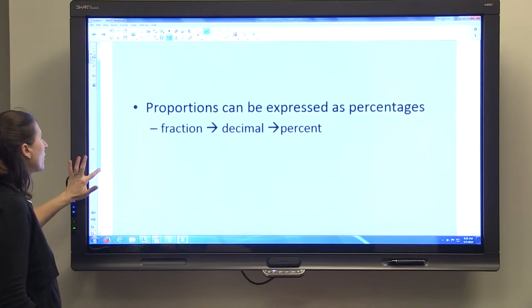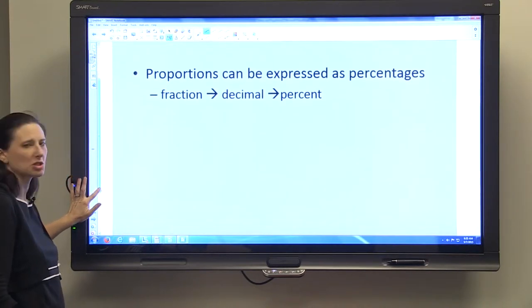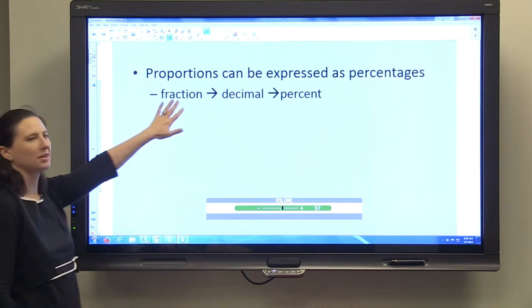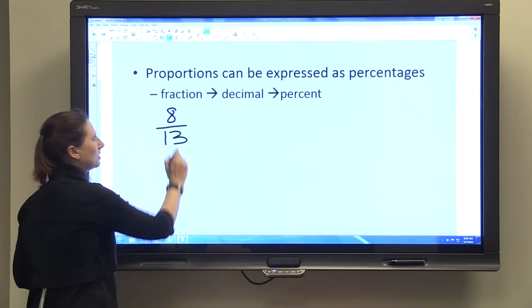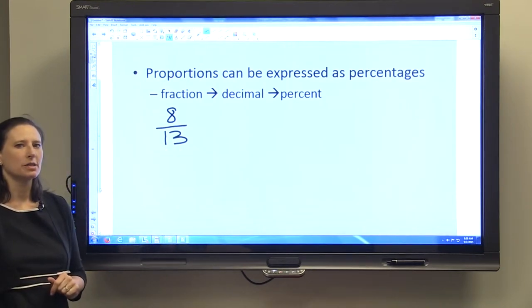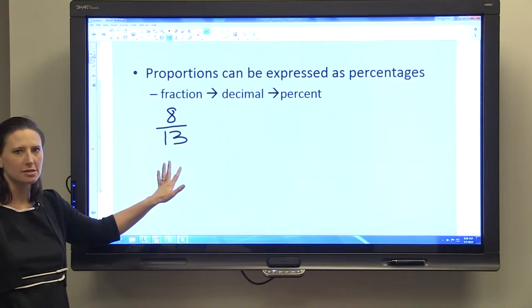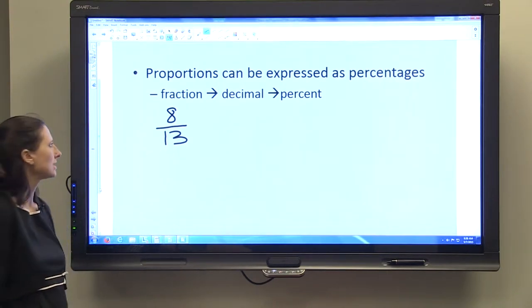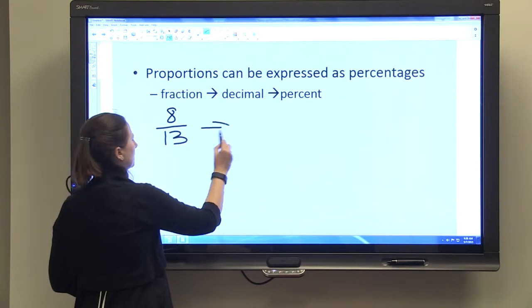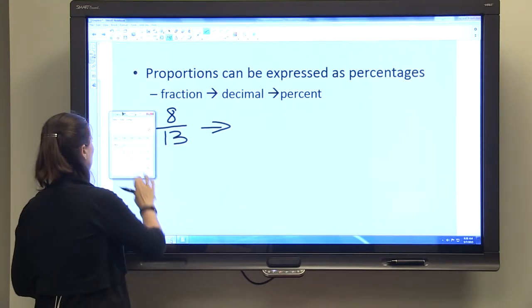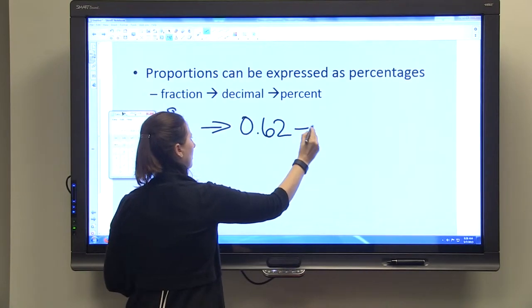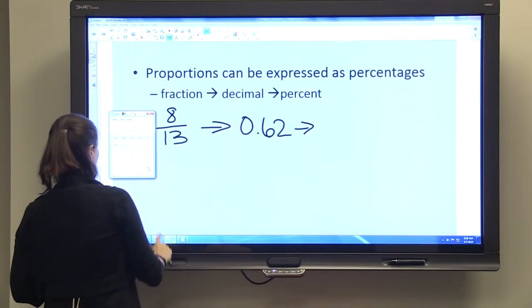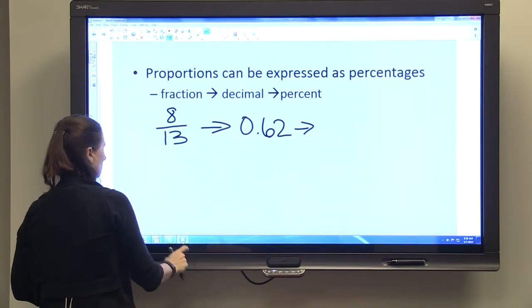Because of what we just saw in terms of proportion, it might have looked familiar - it might have looked like a fraction. If we have our bear proportion, 8 to 13, we can express that as a percent. This is just a reminder of ways to work with percentages, fractions, and decimals. We have 8 out of 13, we're going to convert that to a decimal, and then we're going to convert that to a percent.